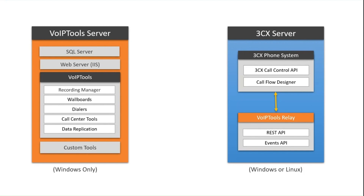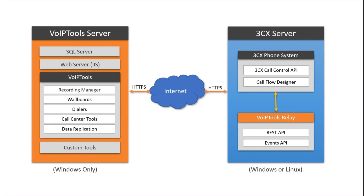As of today, the VoIP Tools server is Windows. We are gradually migrating our tools over to Linux, and eventually you'll be able to run all of our tools on Linux as well. To be clear: our tools go on one server, and the relay is the only thing that gets installed directly on the 3CX server. These two servers communicate over HTTPS, so it's an encrypted connection.